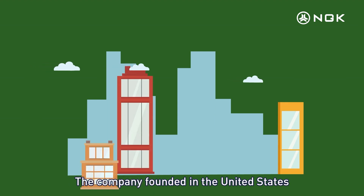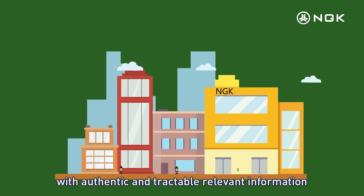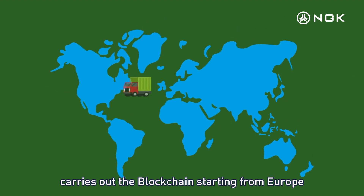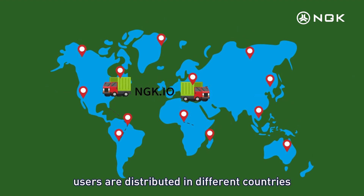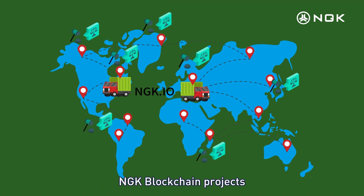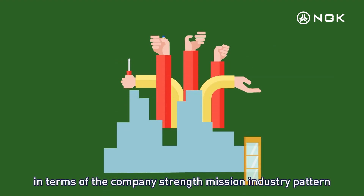The company, founded in the United States with authentic and traceable relevant information, carries out blockchain operations starting from Europe and the United States. Users are distributed in different countries without regional legal restrictions on the development of NGK blockchain projects. In terms of the company's strength, mission, and industry pattern, it reaches heights beyond previous projects.